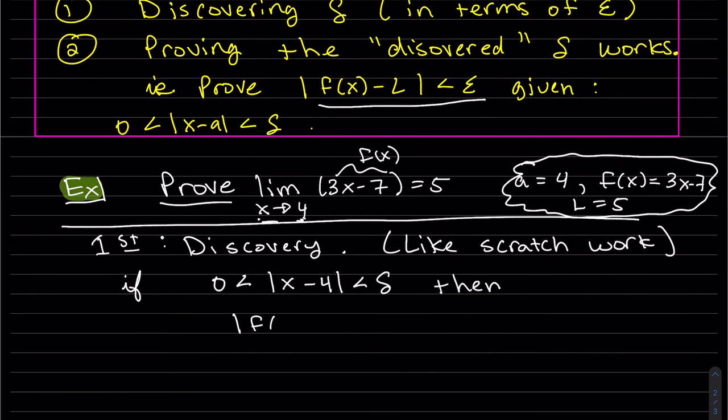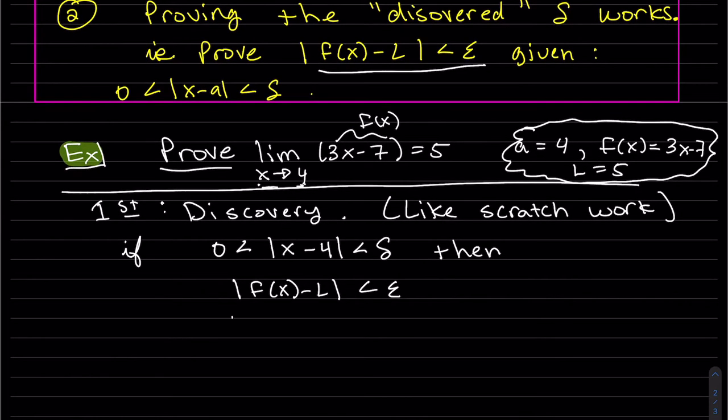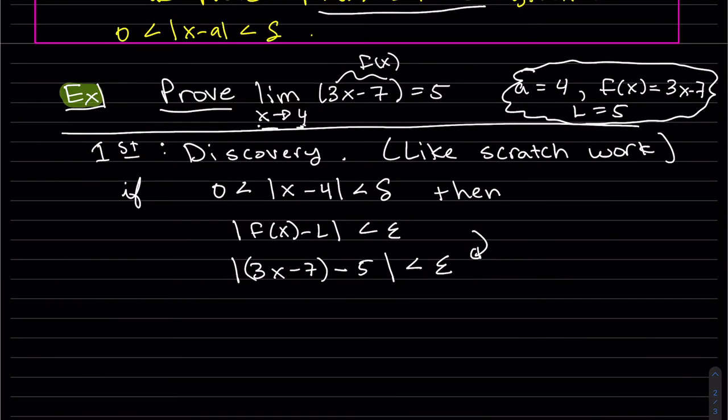Then, we want |f(x) - L| < ε. Writing that out, it's |3x - 7 - 5| < ε. And working backwards, because this is what we want to prove.